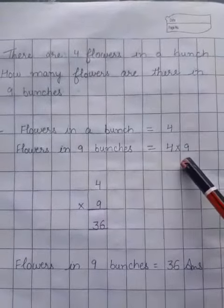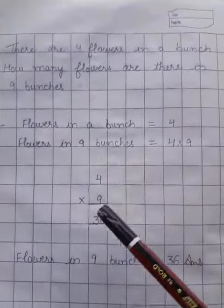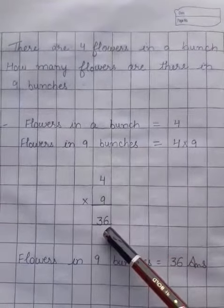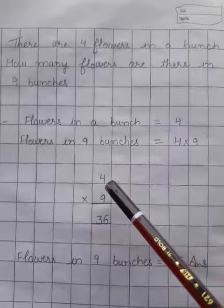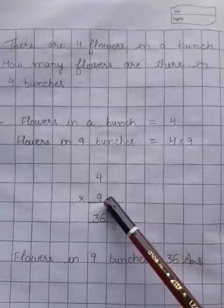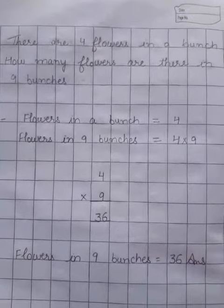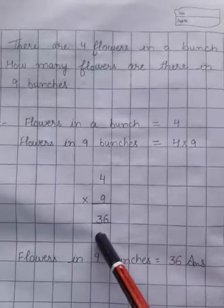Four nu aapha nine dhe nal multiple kar dha na, nine nal multiple karke dhekha aage aapha nine bunches vich kinne flowers ho nge? Eke bunch vich four ne, thik nine vich kinne ho nge? Four nu aapha nine nal multiple karke sambadha alia. Nine dha table aapha four tak read karanghe. Nine dha table four tak read kita, thik thirty six aega.